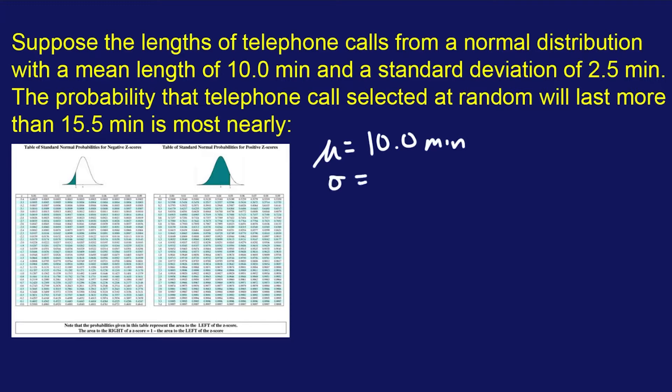And then we have this thing called the standard deviation σ = 2.5. Now that's another nice thing that they give you. And they want to figure out basically what's the probability of a phone call lasting more than 15.5 minutes.